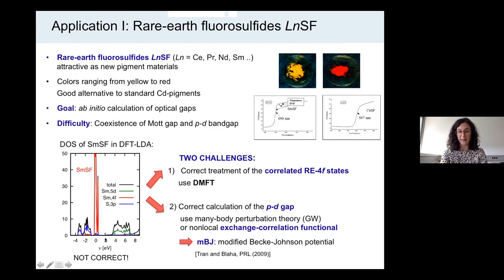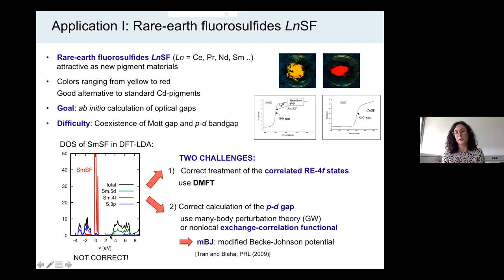This we can resolve by using DMFT, because DMFT can account for the strong correlation effects in the rare earth 4f shell, which will open the Mott gap. But then we are still left with the problem of the PD gap — the gap between the sulfur 3p states and the samarium 5d states. This semiconducting gap is known to be underestimated in LDA.